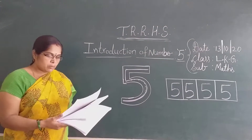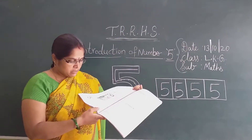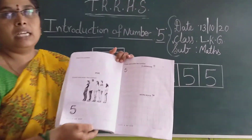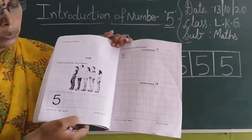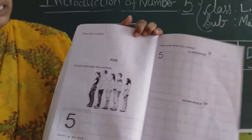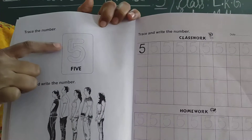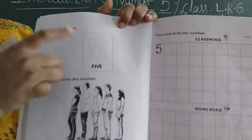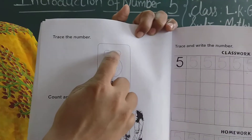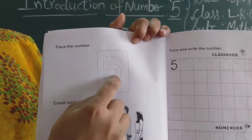Now open the book. Page number 32. Look at here. Which number is this? 5. Number 5. You have to trace on the dots.